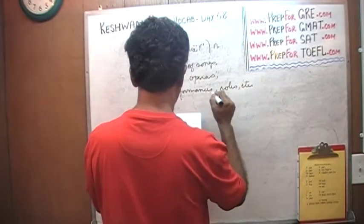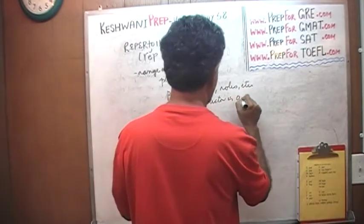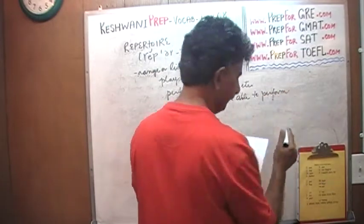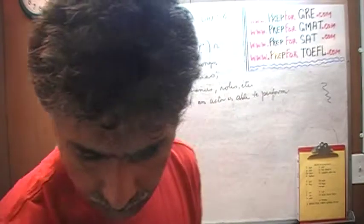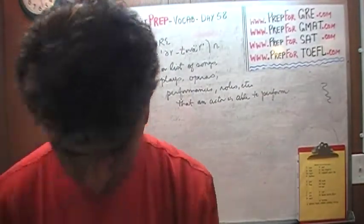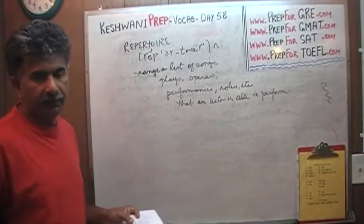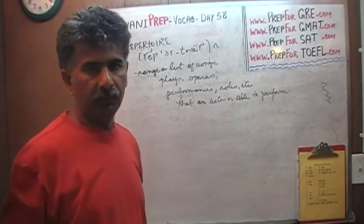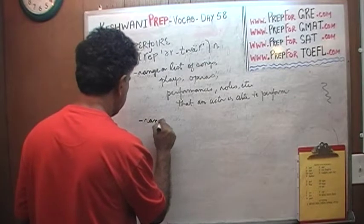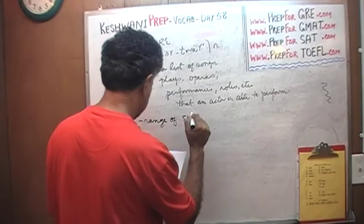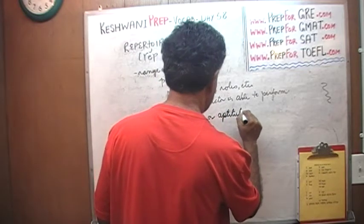Roles and so on that an actor is able to perform. It's pronounced 'repertoire.' Again, it means a range or list of songs, plays, operas, performances, or roles — whatever it is that the actor can do. The whole list of things the actor is able to do is called his or her repertoire. It also means the range of skills or aptitude of a person.